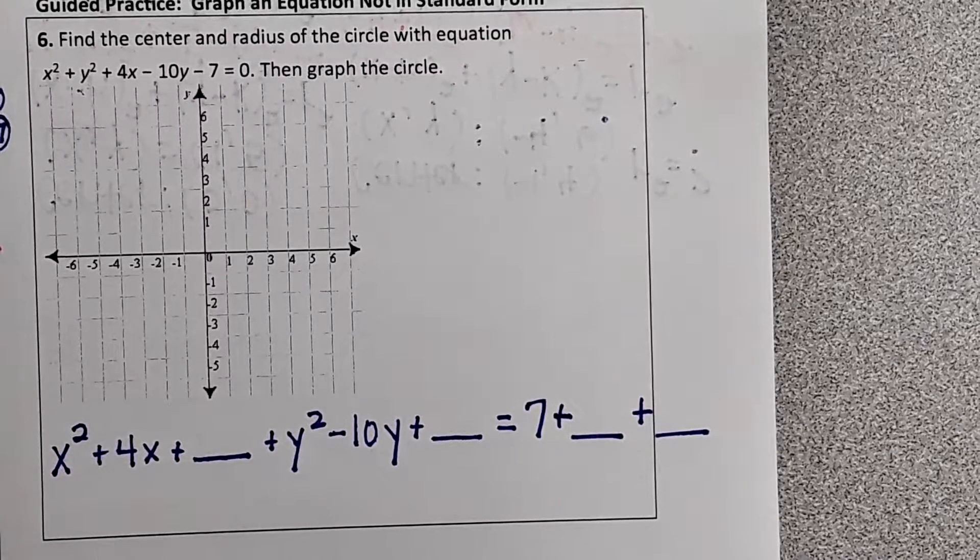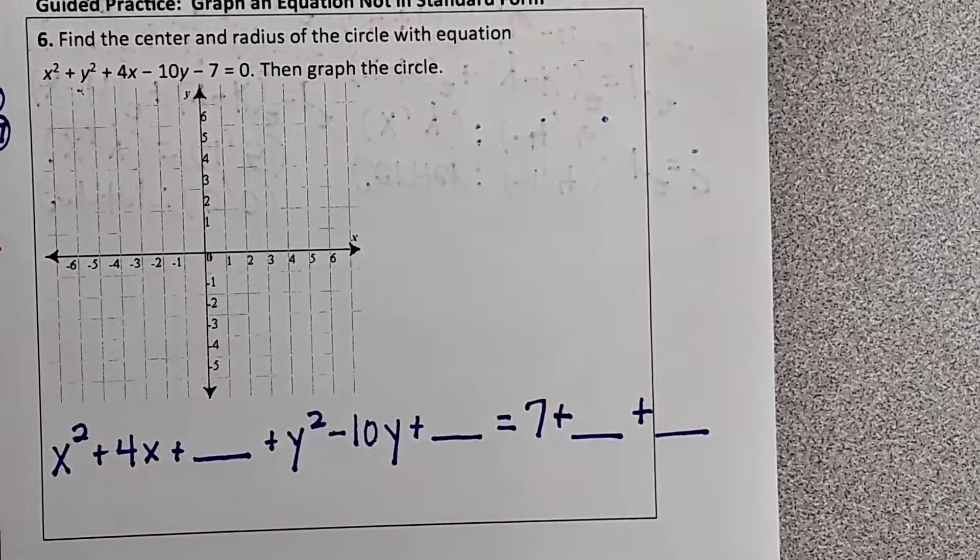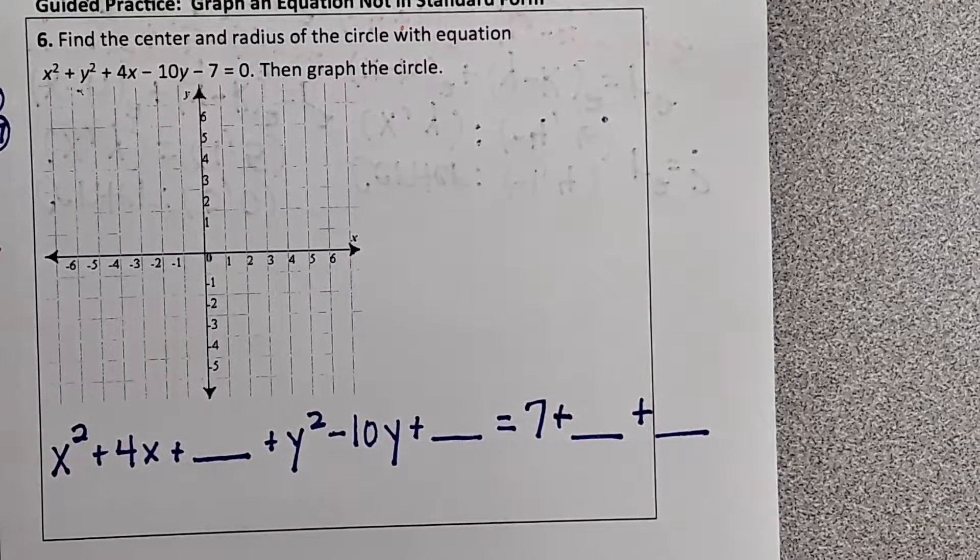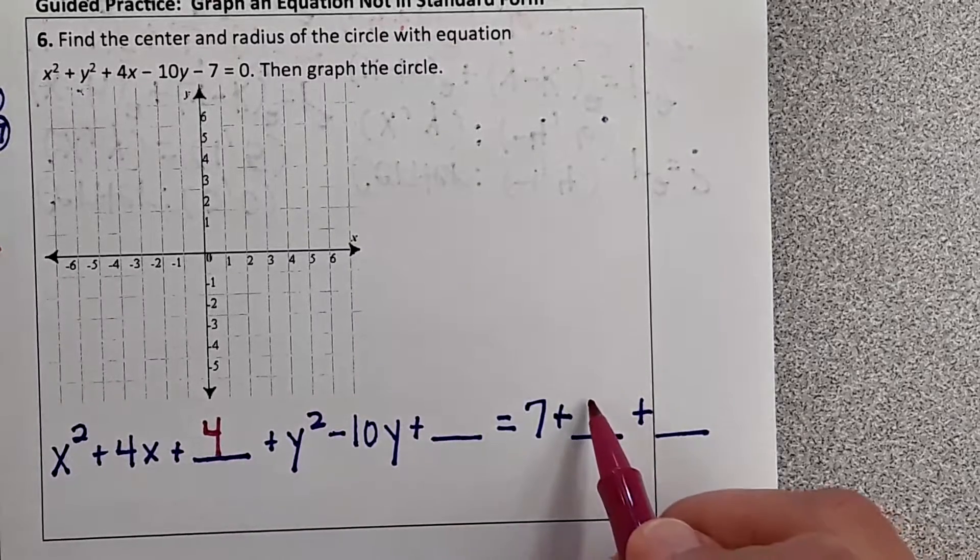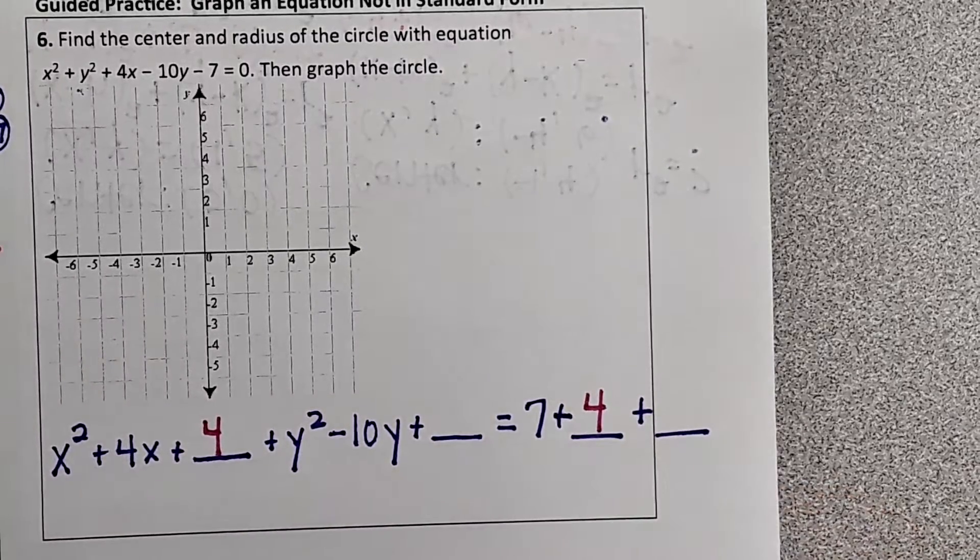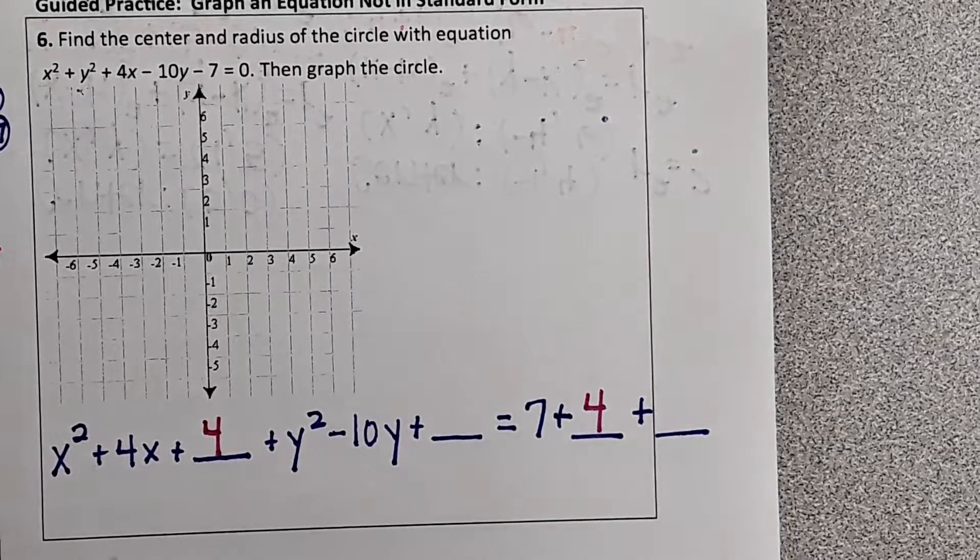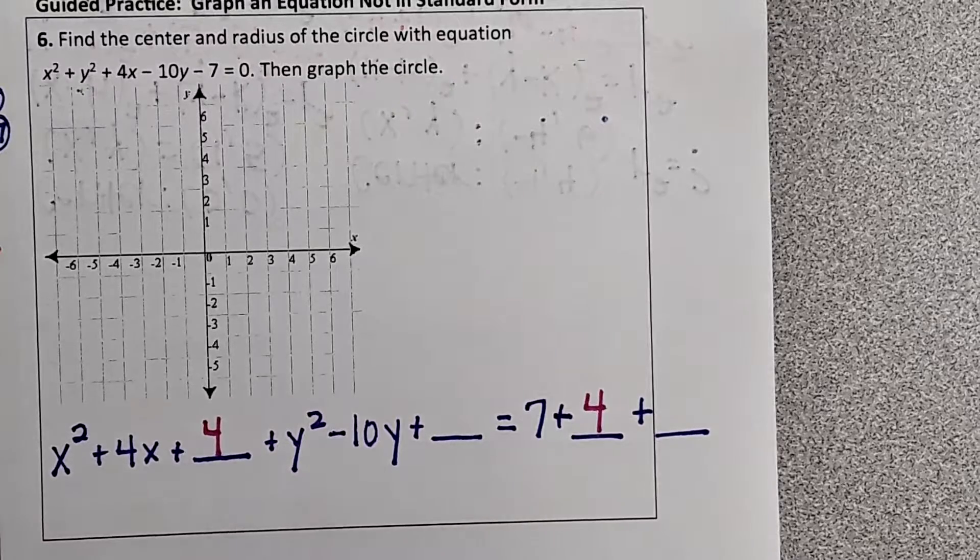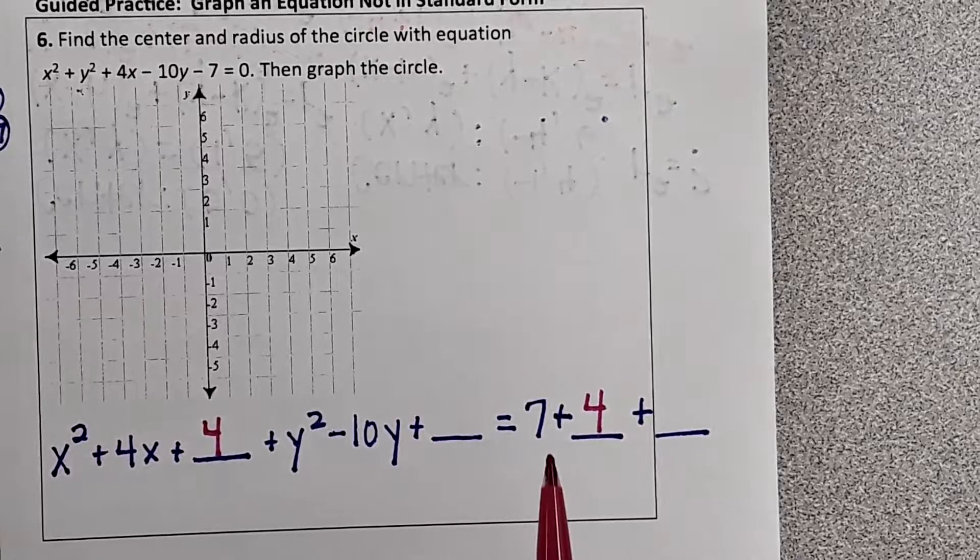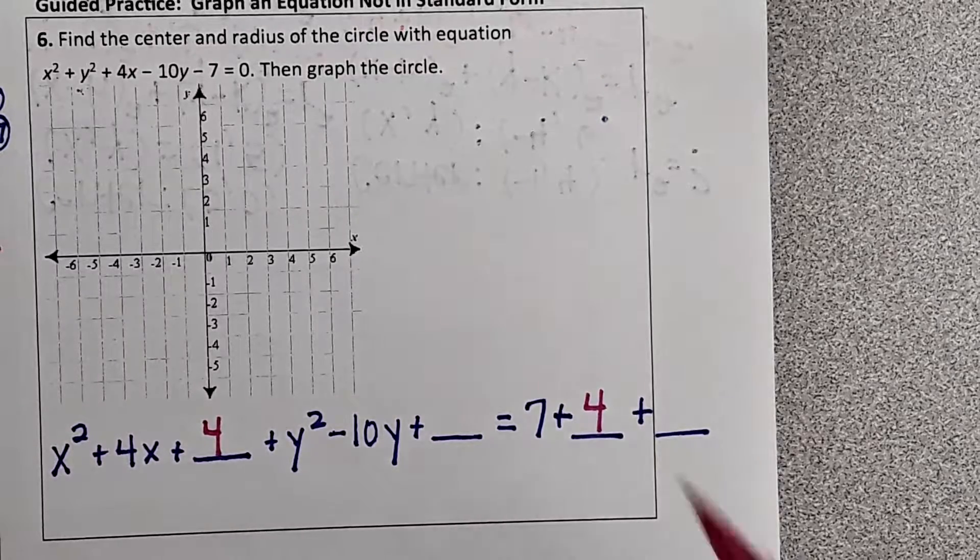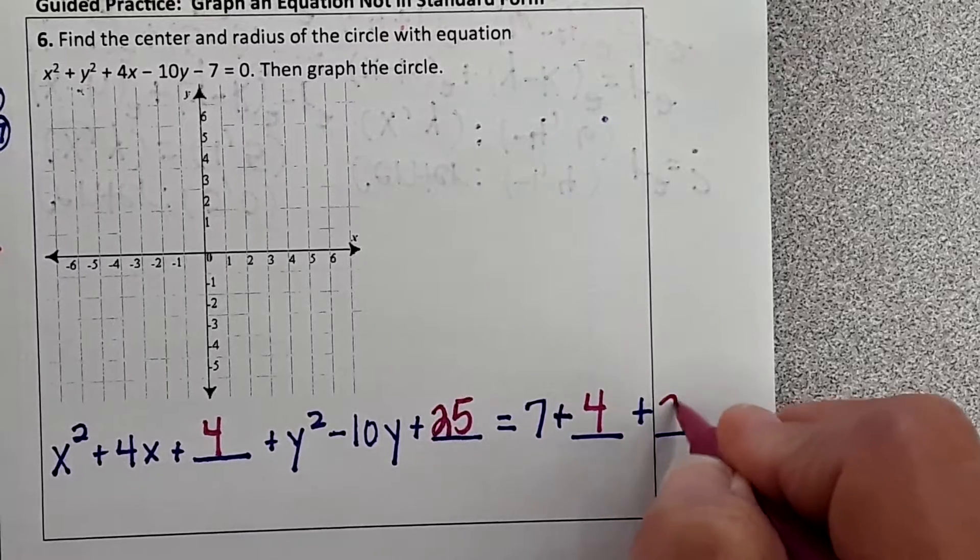In order to complete the square we're going to take half of b. So what is half of b? Two. We're going to square that and what do we get? Four. So if I put four here, I'm going to put four here. You don't have to multiply it by anything because a is one. What is half of ten? Five. And five squared is 25. So I'm going to put 25 here and 25 here.